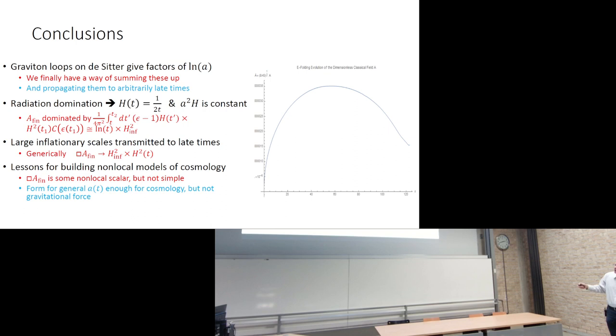If you look at the mode sum that I got or the result that I got during radiation domination, the largest part of cosmology in terms of numbers of E-foldings, H is falling like 1 over 2t and therefore A squared H is constant. That means that the finite part of the expectation value of A is actually dominated by this term of the three terms that I gave. That grows like logarithm of t times the scale of inflation squared. So this is the origin of the title of my talk, A Remembrance of Things Past. This is way, way, way deep in late time cosmology and we're remembering something about the scale of inflation. This is, by the way, a non-perturbative statement, so this could be arbitrarily large. Large inflationary scales are therefore transmitted to late times and generically box of A finite is the scale of inflation squared times the current Hubble parameter squared.